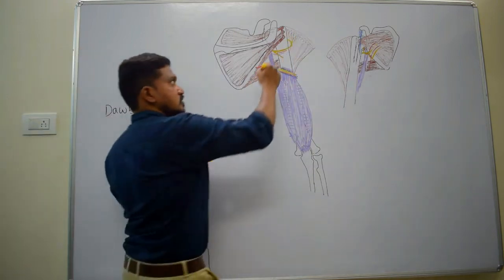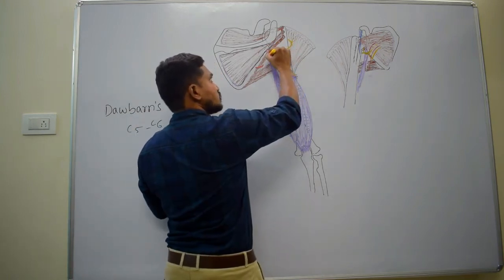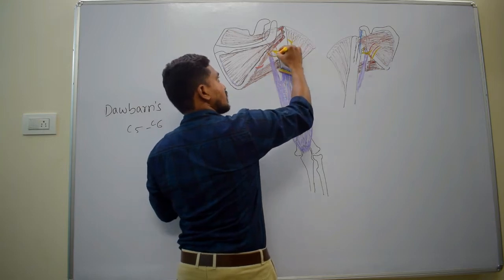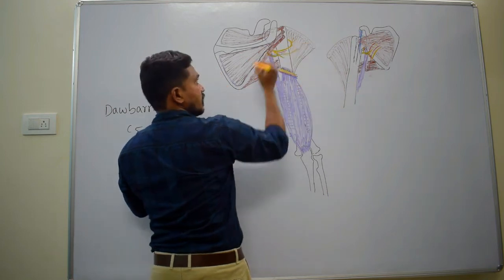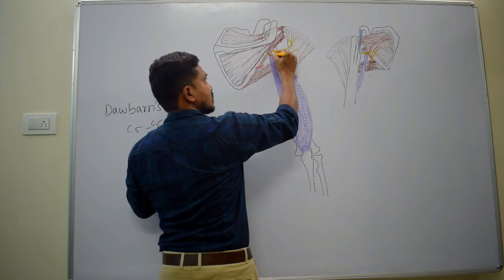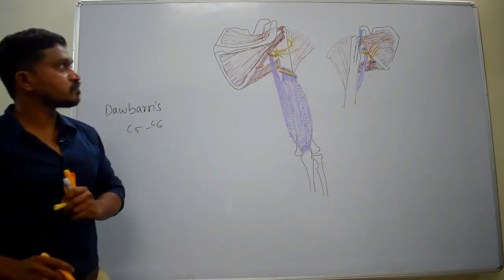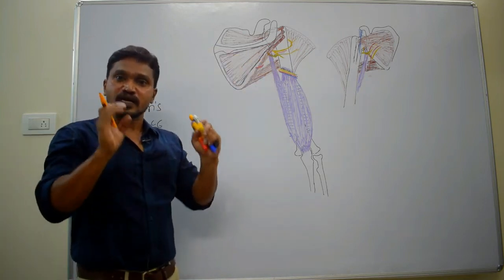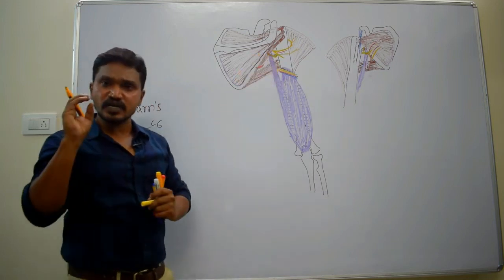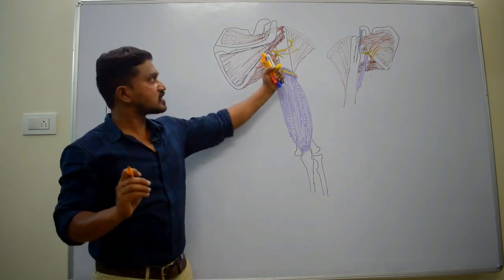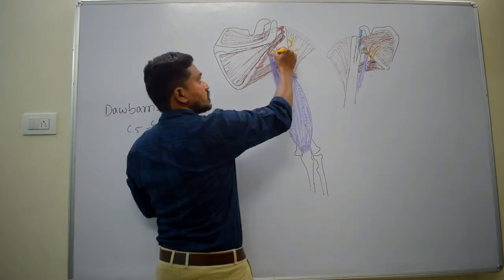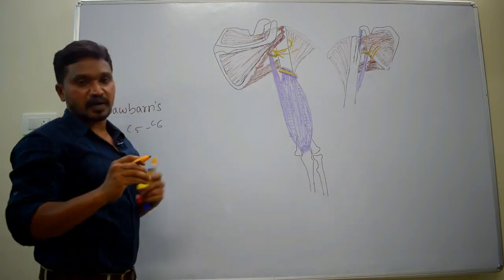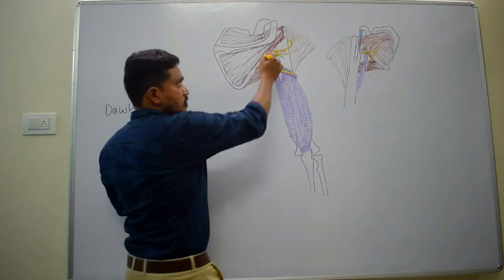The posterior division gives a branch to the teres minor muscle. That branch to the teres minor shows one dilatation called a pseudoganglion. Since it doesn't have any cell bodies of neurons, it is called a pseudoganglion — it is made up of fibro-fatty tissue. So the posterior division of the axillary nerve gives a branch to the teres minor muscle, which supplies to the teres minor after formation of the pseudoganglion.